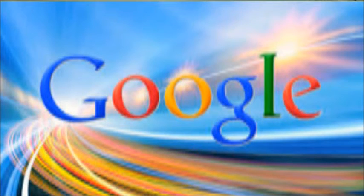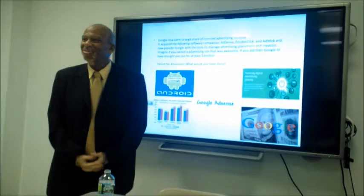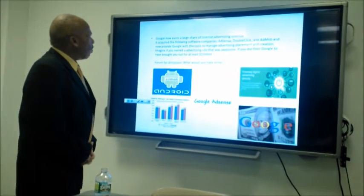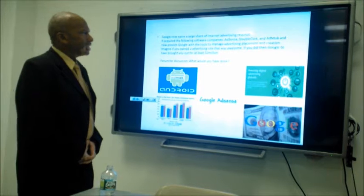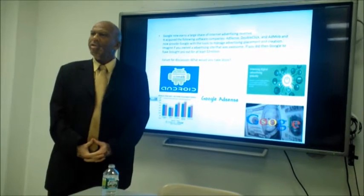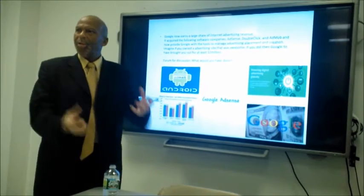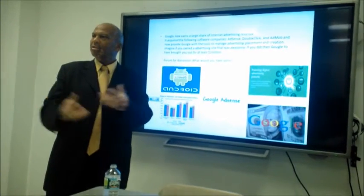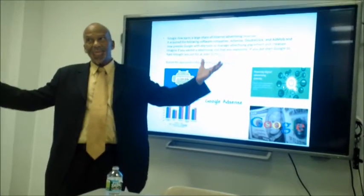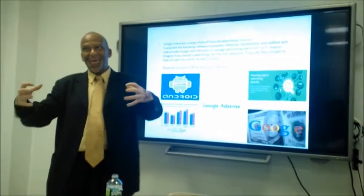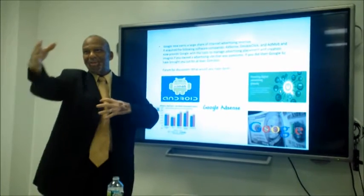Google now earns a large share of internet advertising revenue. It acquired the following software companies: AdSense, DoubleClick, and AdMob, which now provide Google with the tools to manage advertising placement and creation. Google essentially gobbles up these small businesses, and they take care of certain aspects of its business — after all, they're the experts.